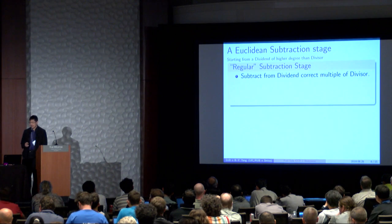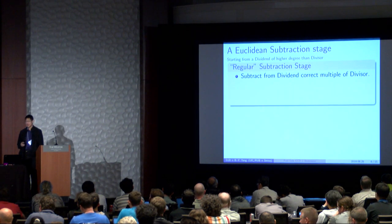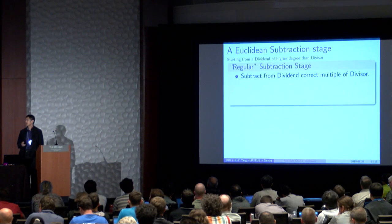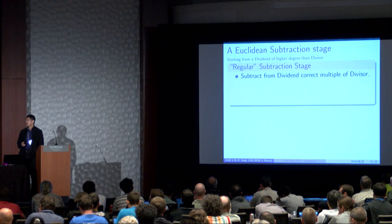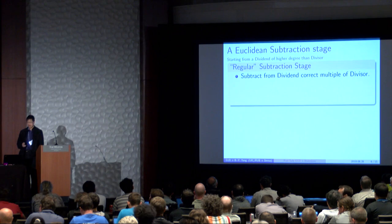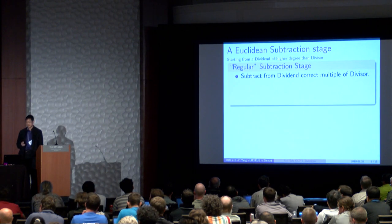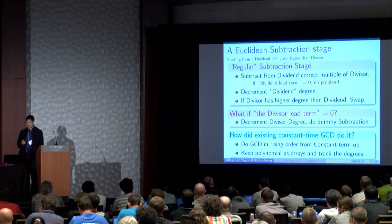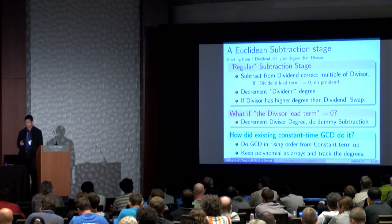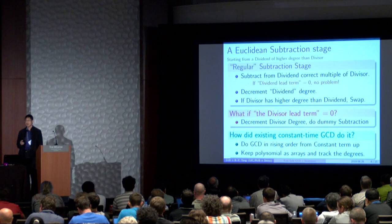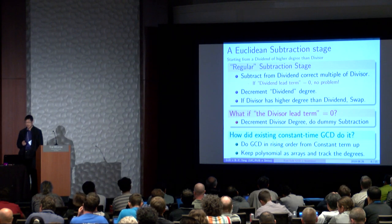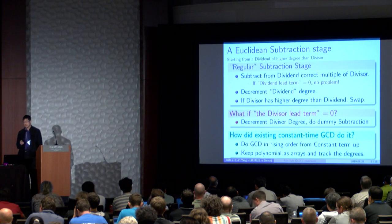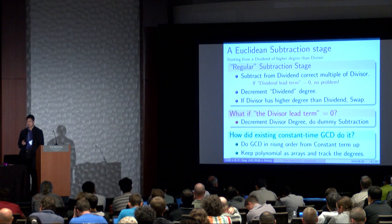So let's take a look again at the Euclidean subtraction stage. We start with a dividend of higher degree than the divisor. The regular subtraction stage subtracts from the dividend a correct multiple of the divisor. If the dividend leading term is zero, there's no problem. We make a dummy subtraction. We decrement the dividend degree, and if the divisor now has a higher degree, we swap the two polynomials.